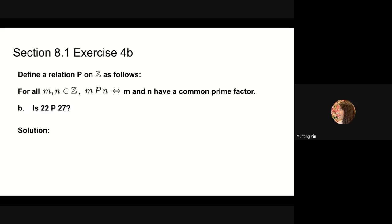For part b, we need to determine if 22 is in relation p with 27. 22 has prime factors 2 and 11. 27 has one prime factor, 3. So no, 22 is not in relation p with 27 because they have no common prime factor.